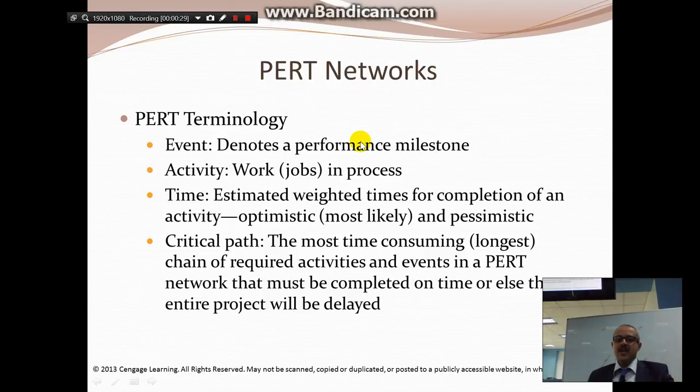PERT Terminology: you have something called event and that denotes a performance milestone. Activity is any job that you do. Critical path is the most time-consuming, longest chain of required activities and events in a PERT Network that must be accomplished on time or else the entire project will be delayed.